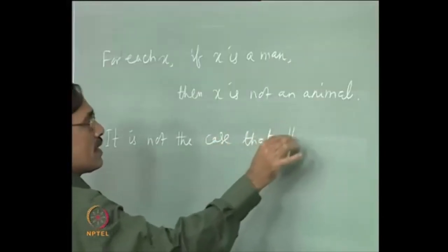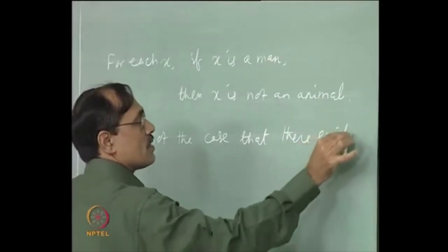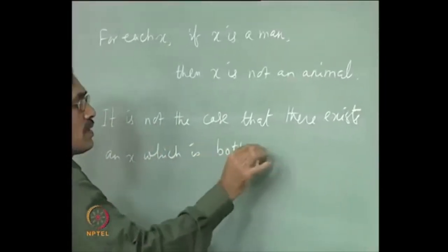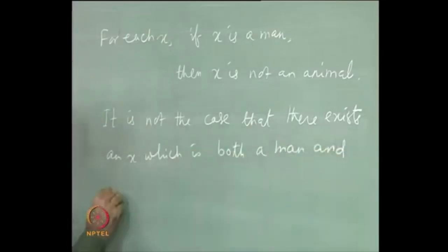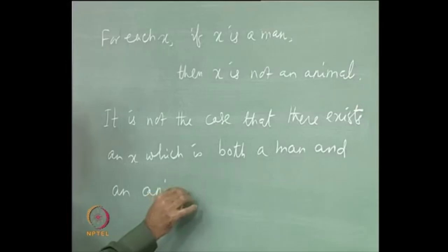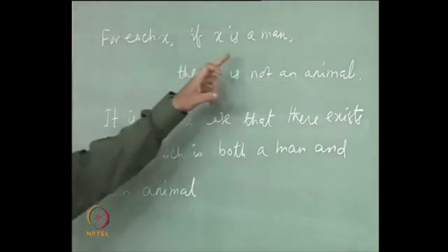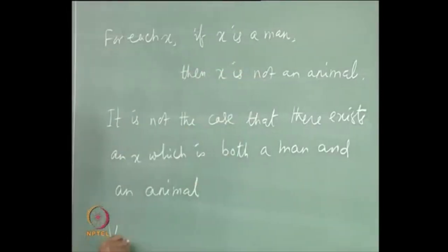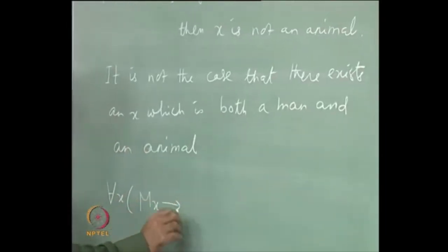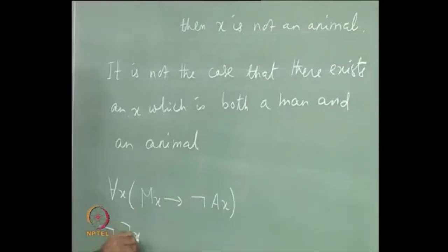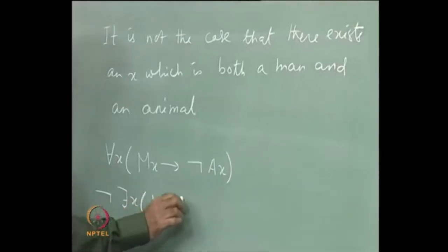There exists an X which is both a man and an animal. Once you write this way, it will be easier for you to translate it to first-order logic. For the first one, if you proceed this way, you would be translating as: for each X, if X is a man, then X is not an animal. In the second way, you would write: it is not the case that there is one X which is both a man and an animal.